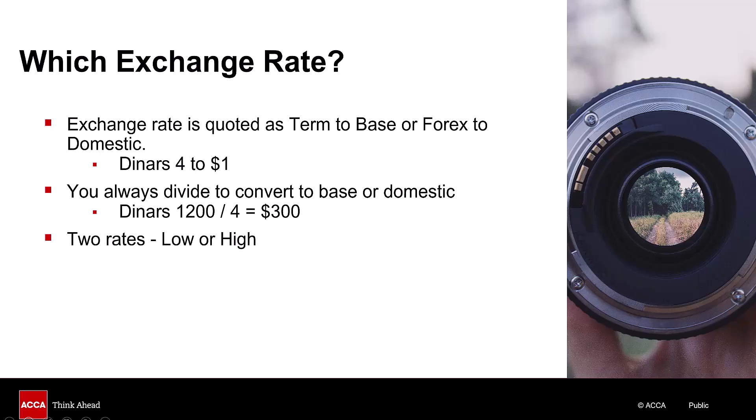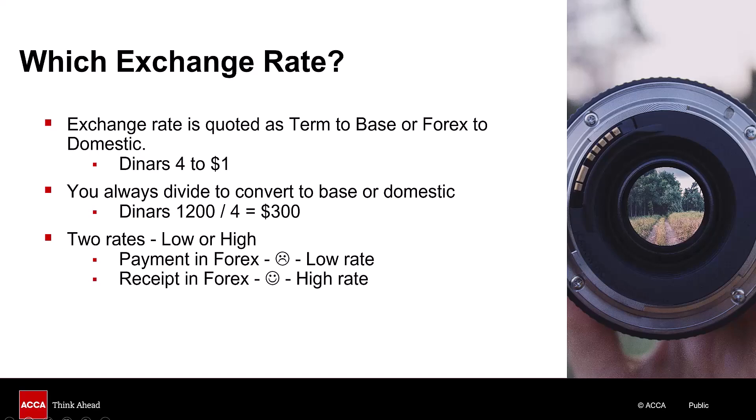There are often two rates given in the question — a low rate and a high rate. If you're making a payment in foreign currency, the term currency, then you're feeling quite low, so you pick the low rate. If you're going to receive in foreign currency, you're feeling very happy — feeling high — so you get the high rate. Remember: the company always loses, the bank always wins. A payment in forex using the low rate would result in a higher payment than if you used the higher rate, and the opposite is true with a receipt. Hopefully that step process will make you successful every time you convert in the ACCA financial management exam.